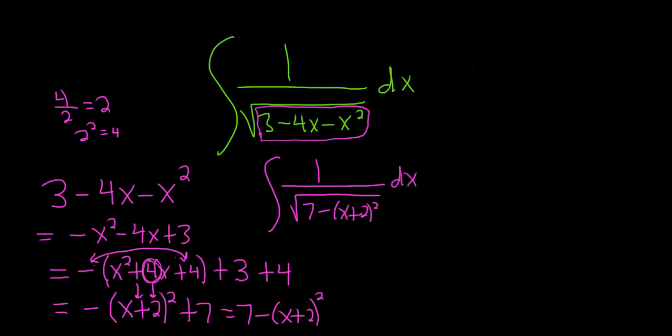Okay, so there is a formula we're going to use in this problem. It's this one. If you have dx over the square root of a squared minus x squared, this is arcsine of x over a. Arcsine of x over a.